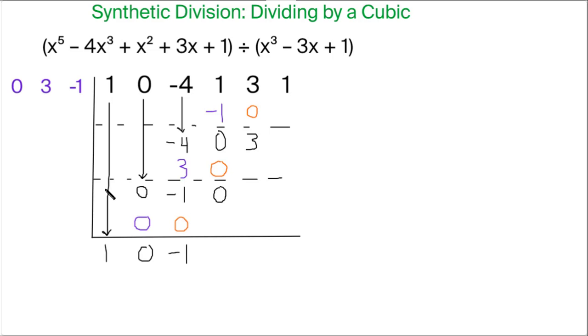So 0 times negative 1 is 0, 3 times negative 1 is negative 3, always up in that diagonal, and negative 1 times negative 1 is positive 1.